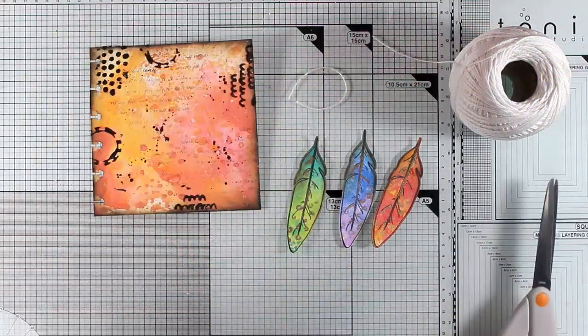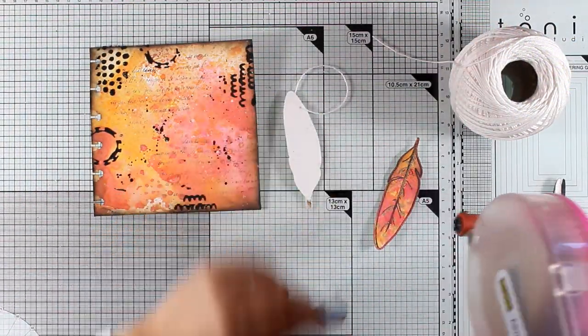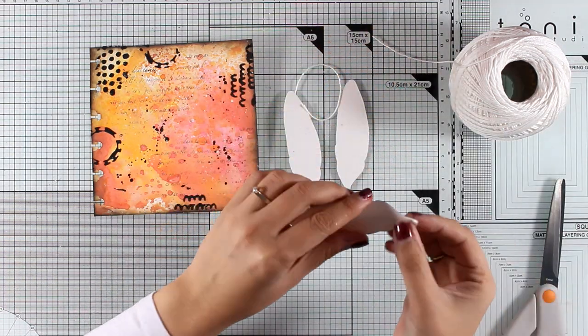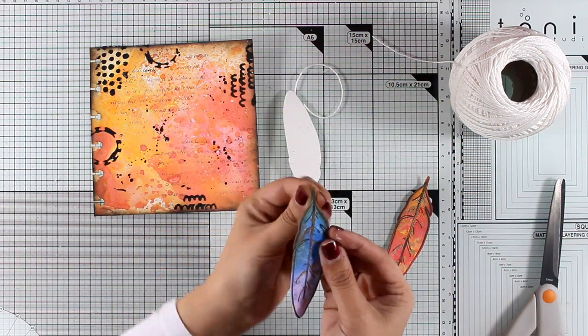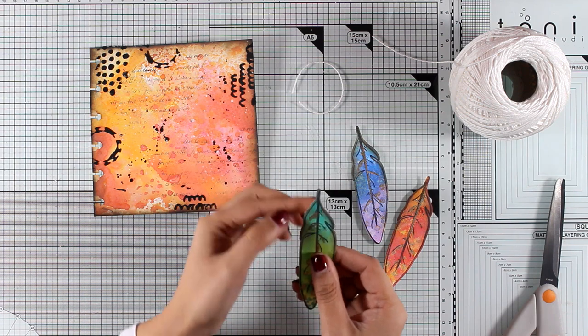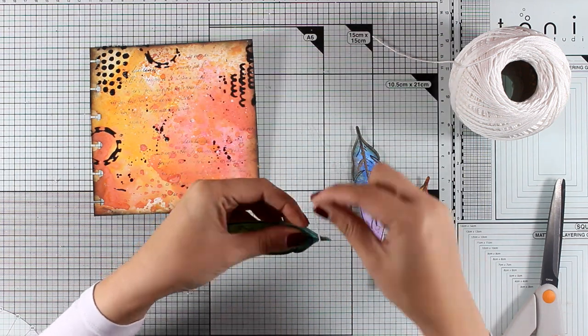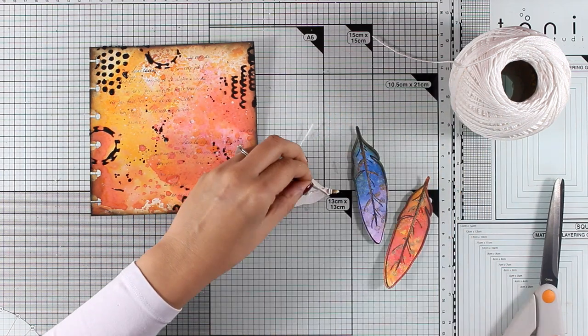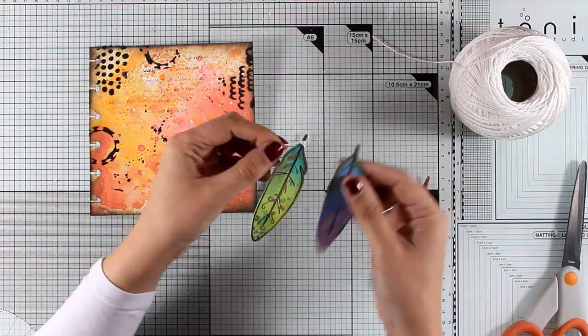Now everything is dry and it's time to add those feathers on my layout. But here is where I decided to add an extra texture on my page. So I'm going to add a little bit of this white thread around the top of those feathers. I'm just going to wrap it there and I have used some tape adhesive at the back so it's going to be secured nicely. I'm going to repeat the same process for all three of those feathers.